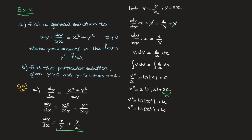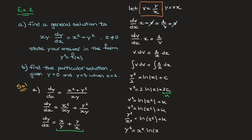Now I'll replace v by y over x, so v squared will be y squared over x squared. In other words, y squared over x squared equals ln of x squared plus k. Finally, multiplying both sides by x squared, we find that y squared equals x squared times ln of x squared plus k times x squared. That's the general solution to this differential equation written in the form y squared equals f of x.